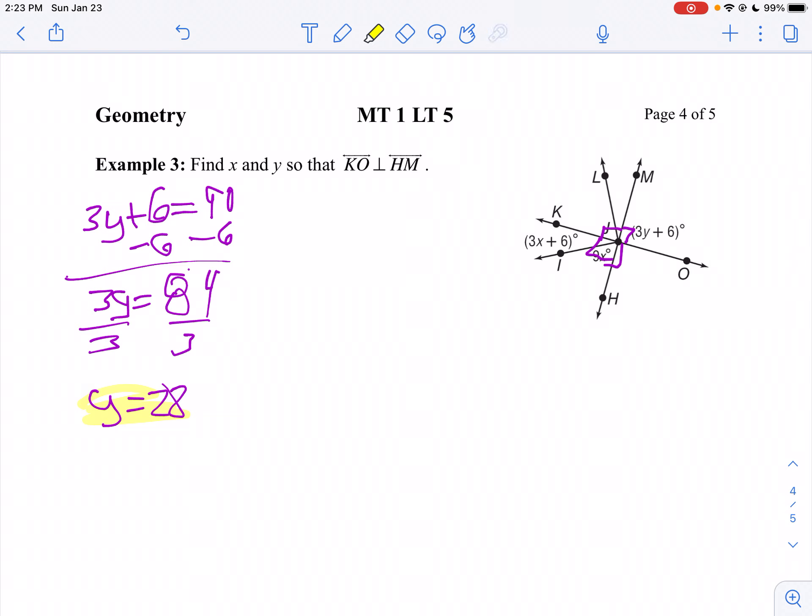Now, what about X? For X, I've got these two angles. So I've got my complementary angles right here.